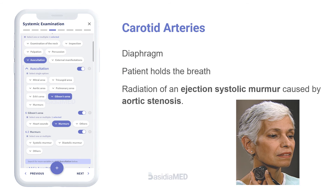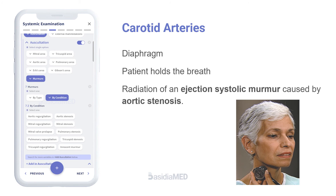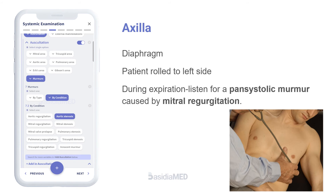Other areas of auscultation: auscultate the carotid arteries using the diaphragm of the stethoscope while the patient holds their breath, to listen for radiation of an ejection systolic murmur caused by aortic stenosis. Roll the patient onto their left side and listen over the mitral area with the diaphragm of the stethoscope during expiration, to listen for a pansystolic murmur caused by mitral regurgitation. Continue to auscultate into the axilla to identify the radiation of this murmur.